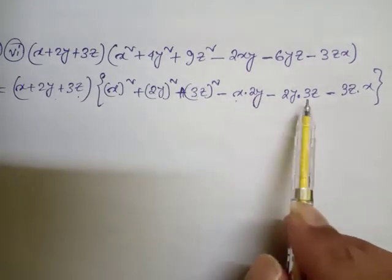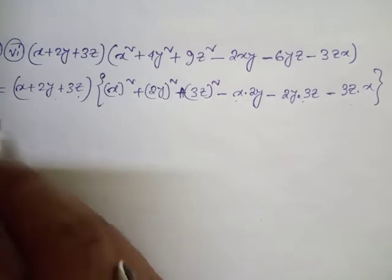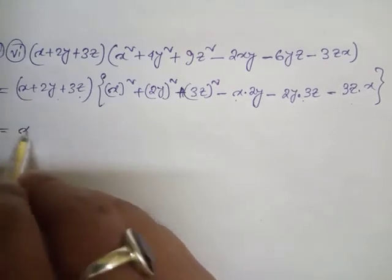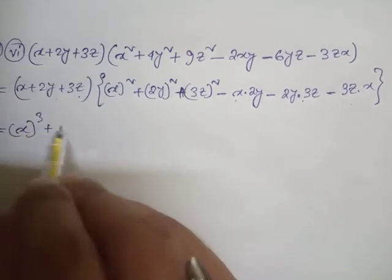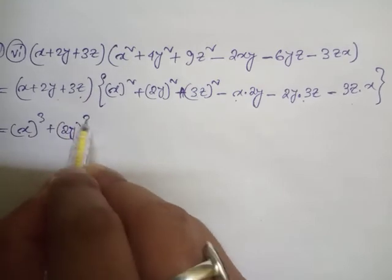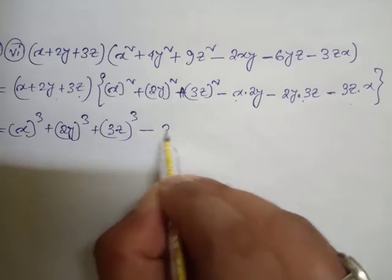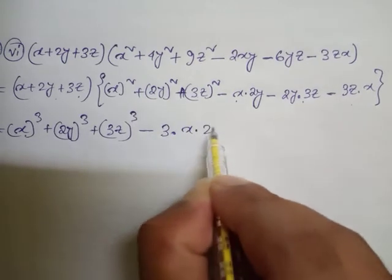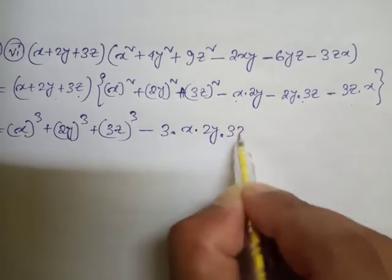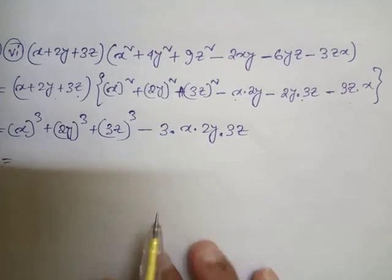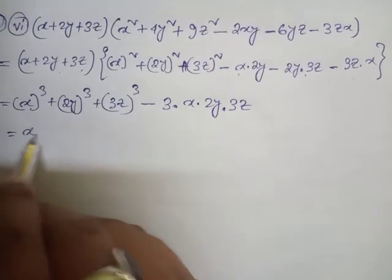Now look, after that here, so a³... 2³ is 8, 8y³. 3³ is 27, 27z³. Minus 3, so 6, and 3 times 6 is 18.